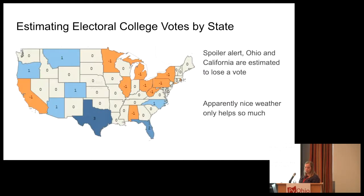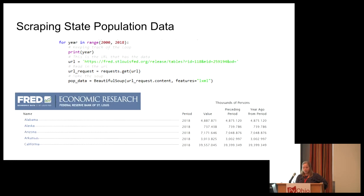My example: I wanted to estimate electoral votes — specifically the change in electoral votes by state — based on forecasted state populations after the 2020 census. Spoiler alert: Ohio and California, per my estimates, will each lose an electoral vote. So apparently nice weather only helps you so much. The first thing I did was scrape state population data from the Federal Reserve Bank of St. Louis. I could have just gone to censusdata.gov and downloaded data by state, but then I would have stayed in R and had no reason to use Python.